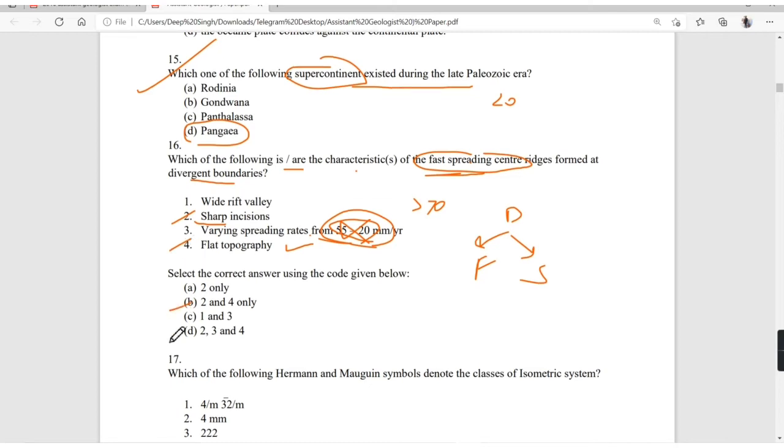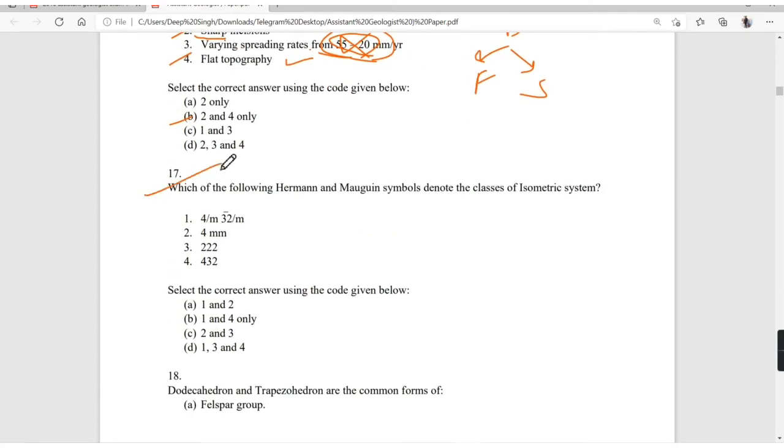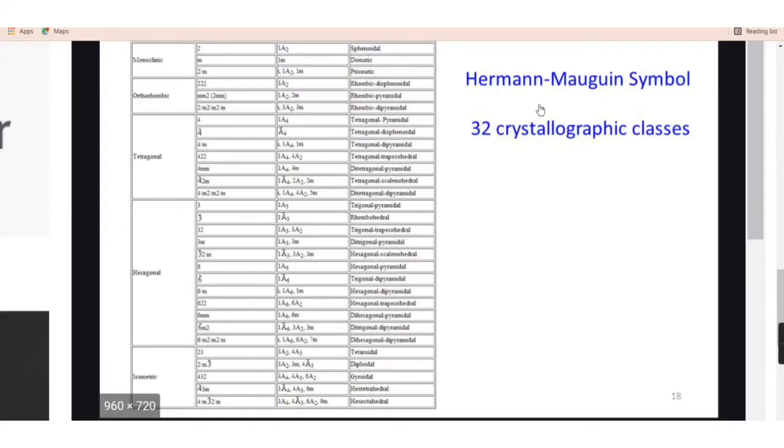Which of the following HM symbol denotes the class of isometric system? You have to remember the table for Hermann-Mauguin symbol of 32 crystallographic classes. For isometric it will be 4/m 3̄ 2/m, 4̄3m, 432, 2/m 3̄, or 23. Similarly if they ask for hexagonal you have to remember this table.